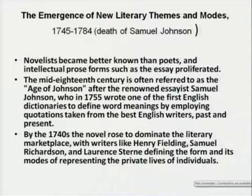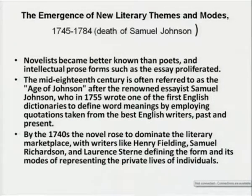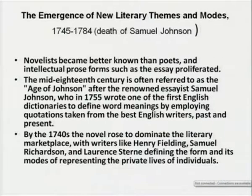After Pope, the emergence of new literary themes — with the death of Samuel Johnson in 1784, novelists became better known than poets, and intellectual prose forms proliferated. The late 18th century is often referred to as the age of Johnson II, after the renowned essayist Samuel Johnson, who in 1755 wrote one of the first English dictionaries to define word meanings, employing quotations taken from the best English writers past and present.